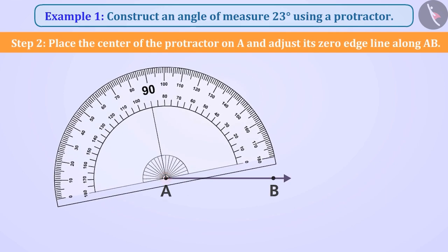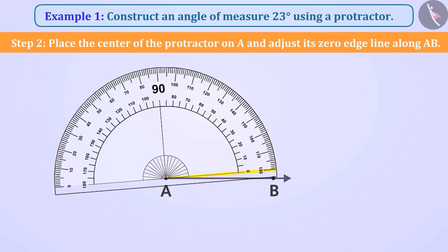Step 2. By placing the centre of the protractor on A, we will adjust the protractor in such a way that its zero edge is along the line AB.